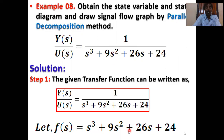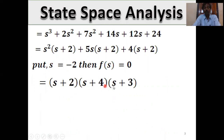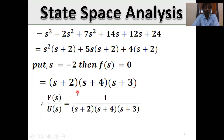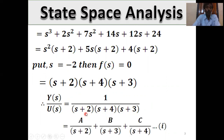Put s = −2 and this vanishes, so one root is (s + 2). The other roots are (s + 4) and (s + 3), meaning s = −4, s = −3, and s = −2. So the actual transfer function in partial fraction form is: Y(s)/U(s) = 1 / [(s + 2)(s + 3)(s + 4)]. This is the transfer function.